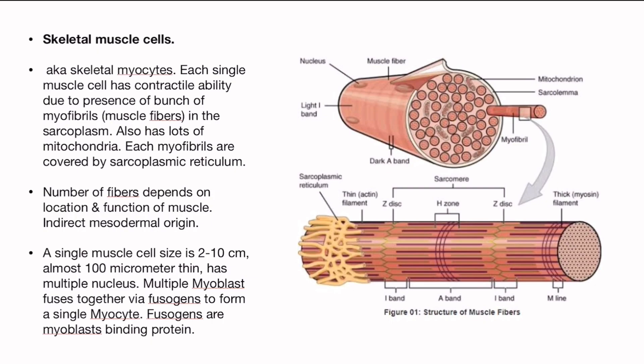Ek ek kochika ke andar bhoot saray muscle fiber jisko hum kehte hain myofibril, thus packed raheta hai — joh aap photo mein dhek rahe ho. Saath mein mitochondria bhi thus thus ke bhara raheta hai. Ab ek ek myofibril, matlab ek ek muscle fiber, woh sarcoplasmic reticulum se ghira hua raheta hai, joh aap niche wale photo mein dhek rahe ho.